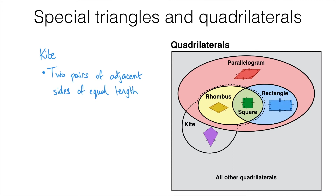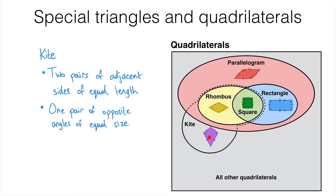Technically a rhombus is a special type of kite — it has two adjacent edges that are the same length and another two that are the same length, and it just so happens all four are the same length. So since the rhombus is a special type of kite, the square is also a special type of kite. There's one more property of the kite: it has a pair of equal opposite angles. The general kite has one line of symmetry down the middle, unless it is special like a rhombus or square. Kites that are not a rhombus or square also have no rotational symmetry.